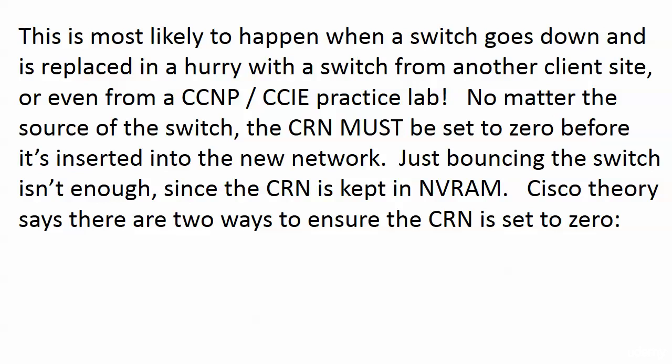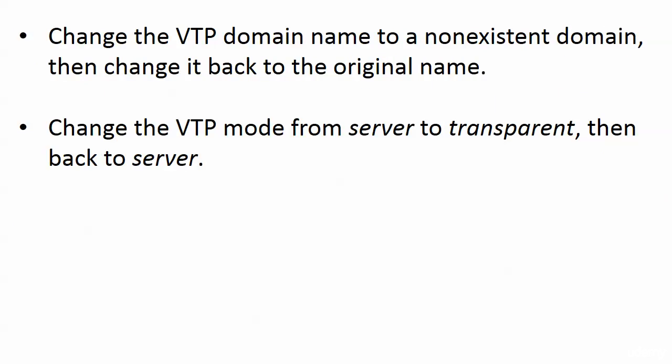Just bouncing the switch is not enough because the CRN is kept in NV RAM — you can bounce it all you want, and when it comes back up the CRN will be the same. Cisco theory holds there are two ways to ensure the CRN is set to zero: first, change the VTP domain name to a non-existent domain name and then change it back to the original; second, change the VTP mode from server to transparent and then back to server. When we come back, we'll try both of those on the live switches, and then I'll show you how to fully initialize a switch.